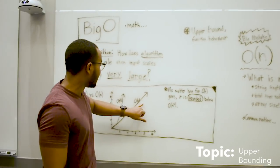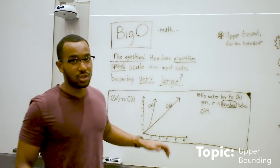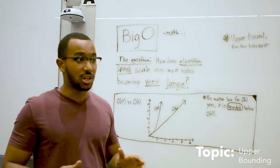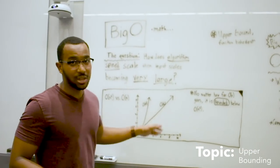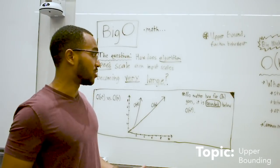We know that this linear function is not going to go past an n squared function as input becomes very large. We know that the linear time function is going to be faster as input gets very large.